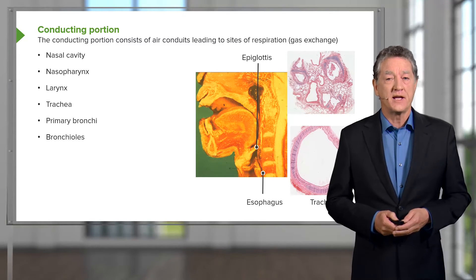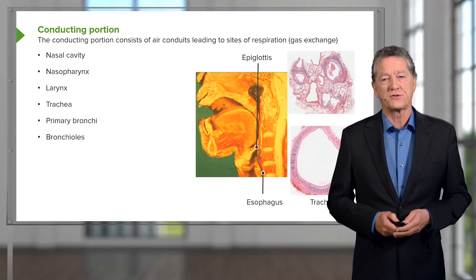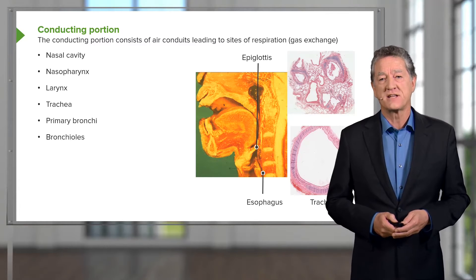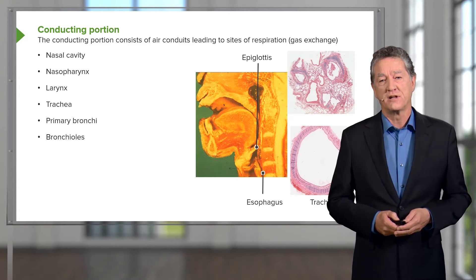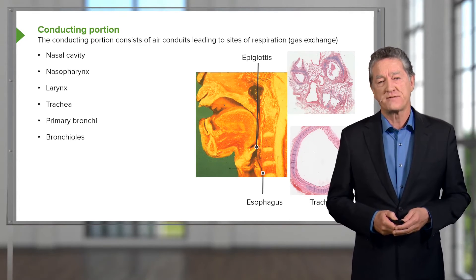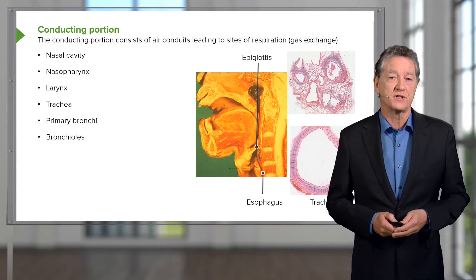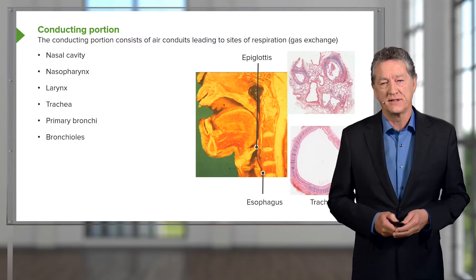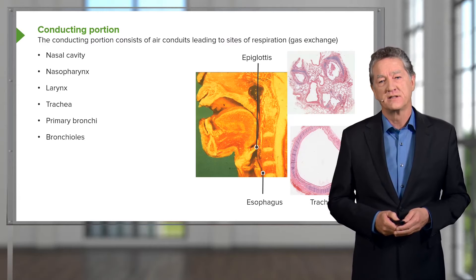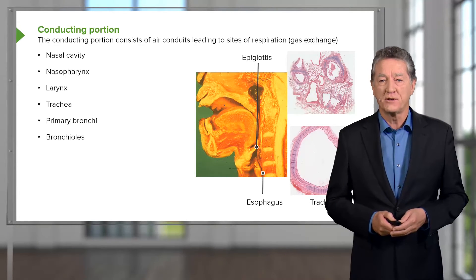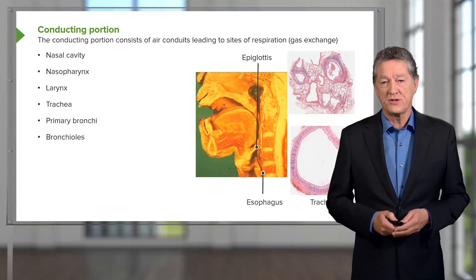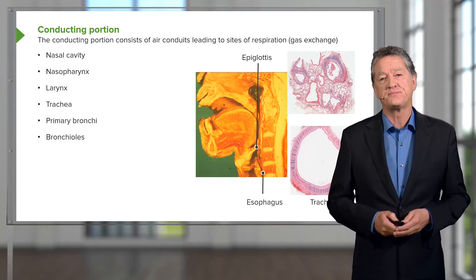The epiglottis is a very important structure. It's flexible elastic cartilage lined mostly by stratified squamous epithelium because of the wear and tear during swallowing, but also the very small component that sits just above the larynx — the entry into the airway — is lined by respiratory tract epithelium, which we'll cover in more detail later in this lecture.